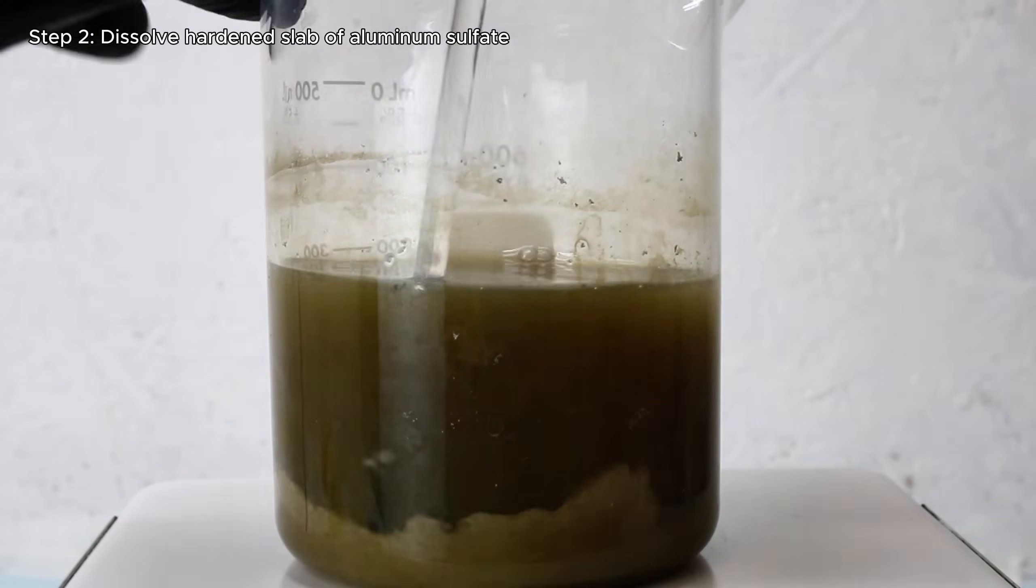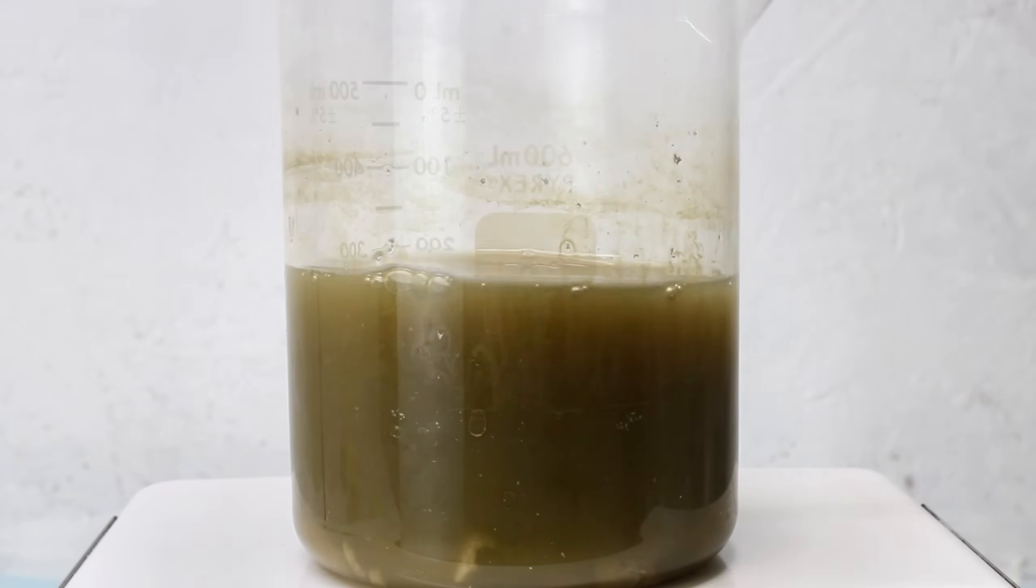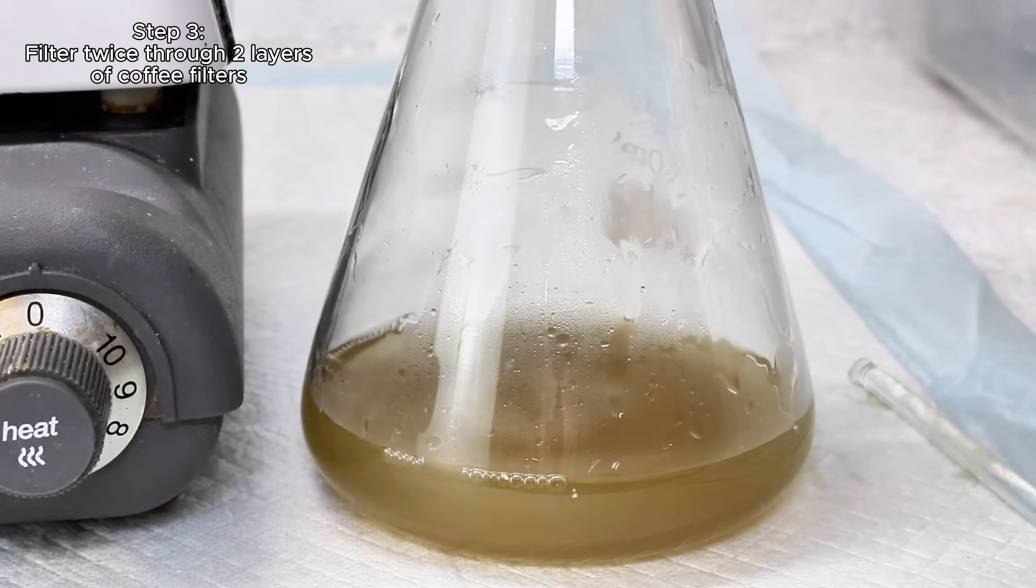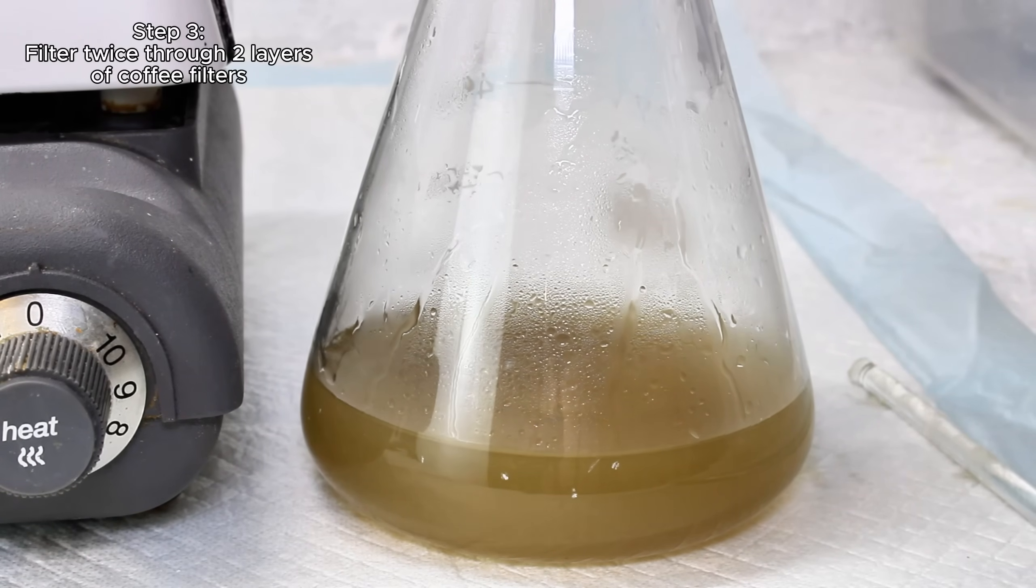When I came back the next day, this had fused into a solid mass of aluminum sulfate, which is also a form of alum called papermaker's alum, and can be used in a lot of the same ways as potassium alum, but it's far harder to crystallize.